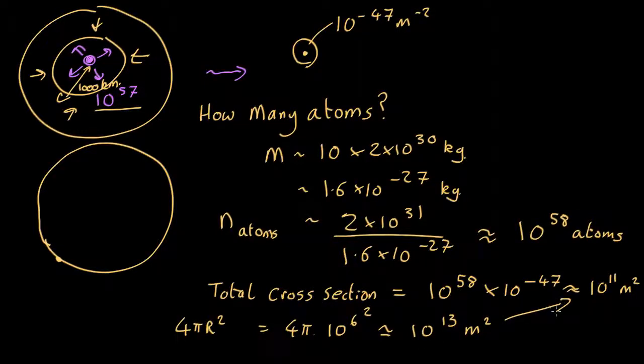Which is about 100 times bigger than that. So what this is telling us is that if you could approximate all the infalling gas as a shell about a thousand kilometers out, about 1% of the neutrinos will be intercepted.